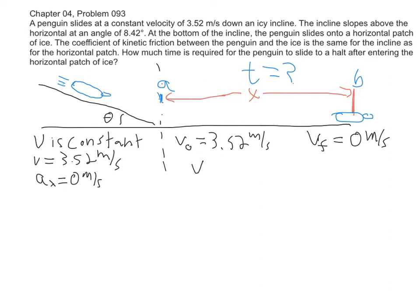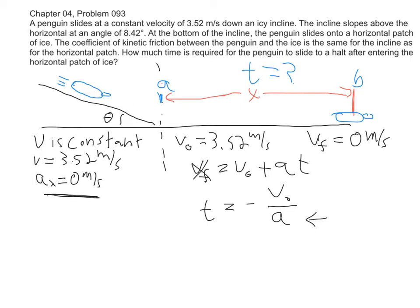Our equation of motion says V final equals V initial plus acceleration times time. V final is 0, so we can see that time is going to be equal to negative V initial divided by our acceleration. If we can find acceleration, we can solve for our time. The question then is: how do we find the acceleration? I said the acceleration in x on the slope is 0, but a value of 0 would mean it takes an infinite amount of time, which doesn't make sense.